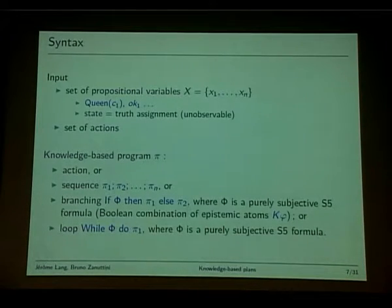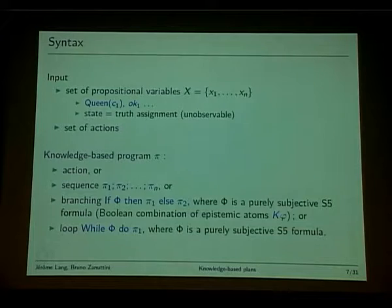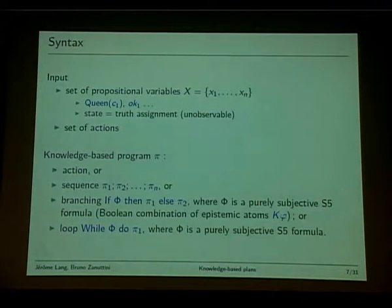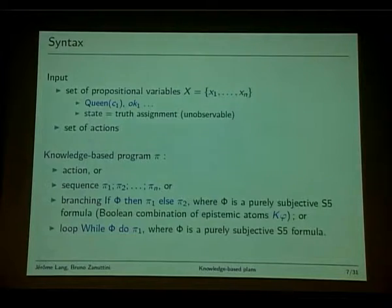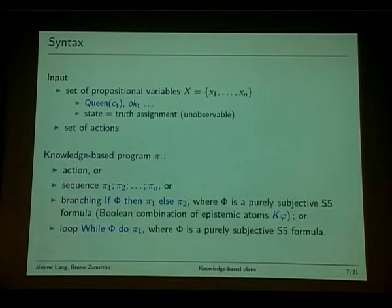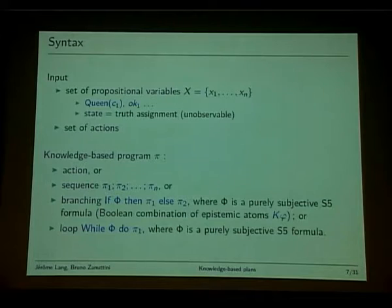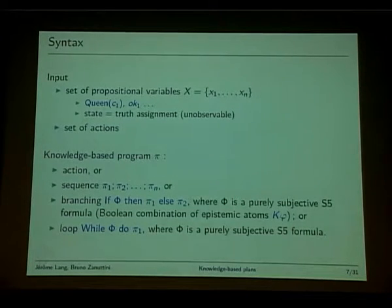We have a set of propositional symbols x1 up to xn — such as 'card one is a queen' or 'component one is okay.' A state is a truth assignment, an evaluation function assigning a truth value to all propositional variables. A knowledge-based program is defined as follows: an atomic action is a knowledge-based program; a sequence of knowledge-based programs is a knowledge-based program; and branching is also a knowledge-based program — 'if phi then phi-1 else phi-2' — where phi is a purely subjective S5 formula that is epistemically interpretable.